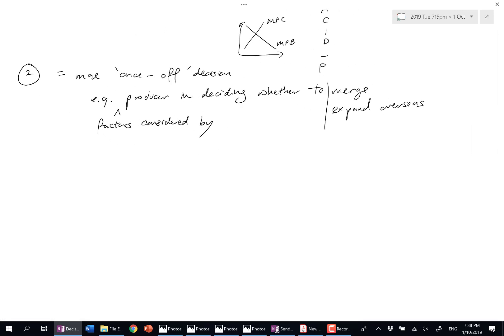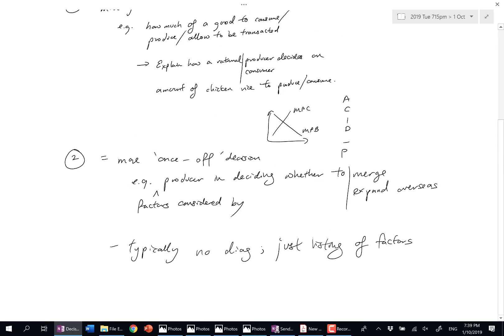If you are looking at once-off decisions, typically there's no diagram. We don't really draw a diagram. Why? Because when you draw a diagram to illustrate the marginalist principle, then how do you draw this for total cost, total benefit? We can't, and we don't. So, typically, no diagram. It's just a listing of points, or listing of factors. Benefits, costs, unintended consequences, and constraints. So, are you clear on the difference between the two?